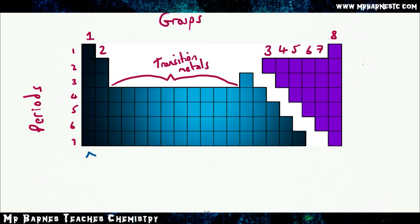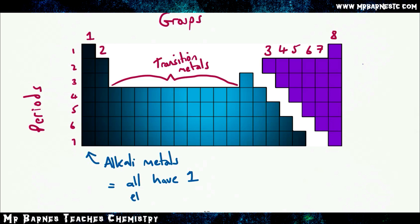Group one are your alkali metals, so anything in this first column is classed as an alkali metal. If you remember back to the electronic configuration part of the course, they all have one electron in the outer shell.